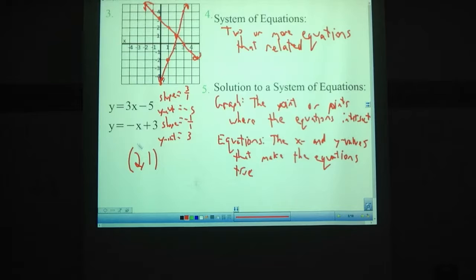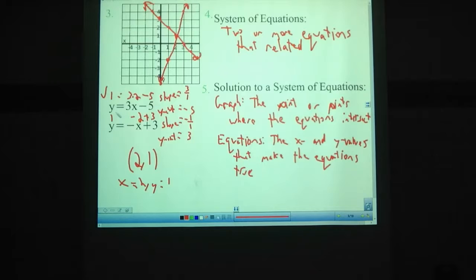Let's look at that. If we put in a 2 for x, let's write this out. x = 2, y = 1. Put in a 2 for x and a 1 for y. That gives us 1 = 3(2) - 5. 3 times 2 is 6. 6 - 5 is 1. 1 = 1. Check. And here we would have 1 = -2 + 3. -2 + 3 is 1. Check.